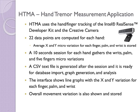The HTMA was created with the hand and finger tracking features of the Intel RealSense Developer Kit. The application reads 22 points of each hand and calculates the X and Y micro-variations of fingers, wrist and palm during a 10-second session for each hand. The data is stored in a text file in such a way that it is easy to use for analysis.